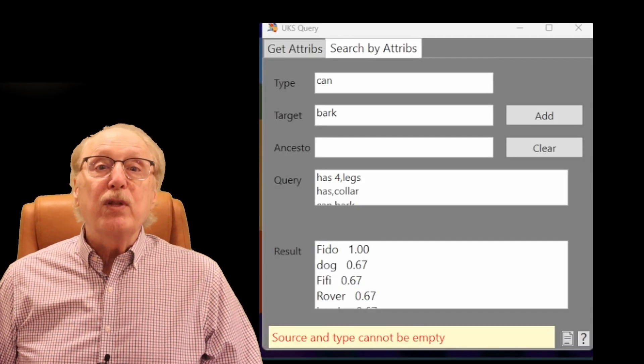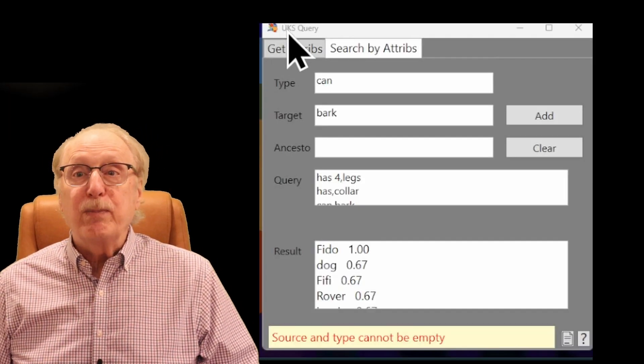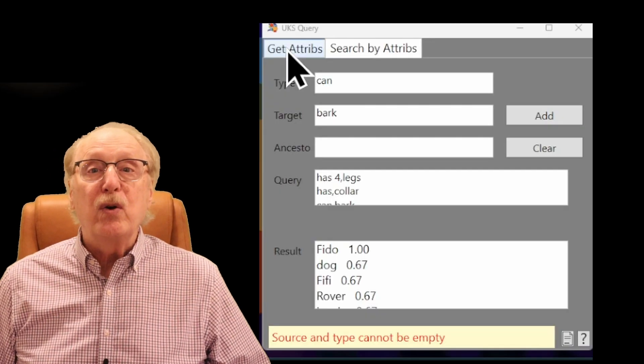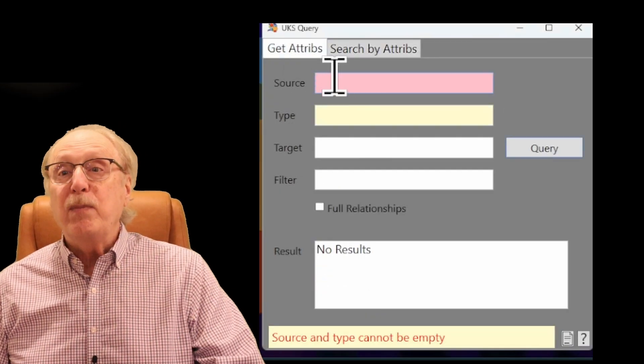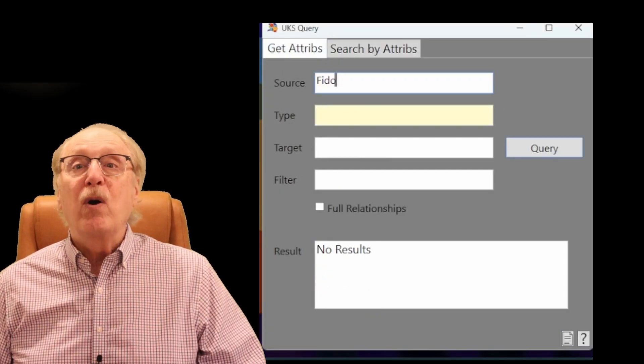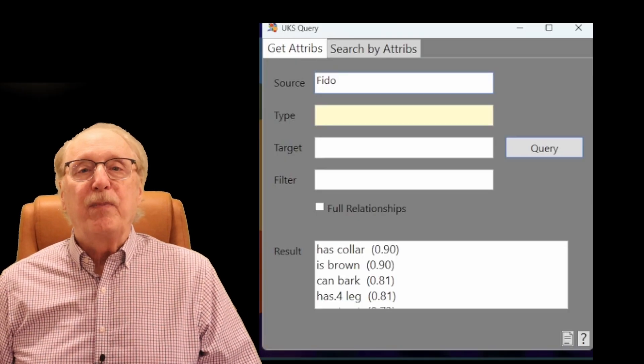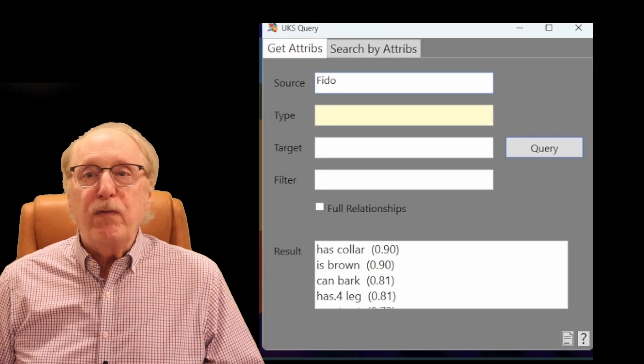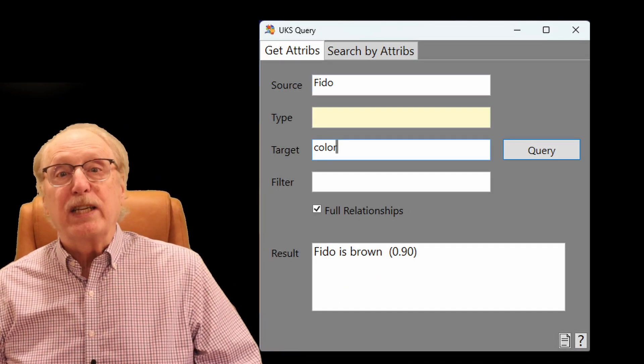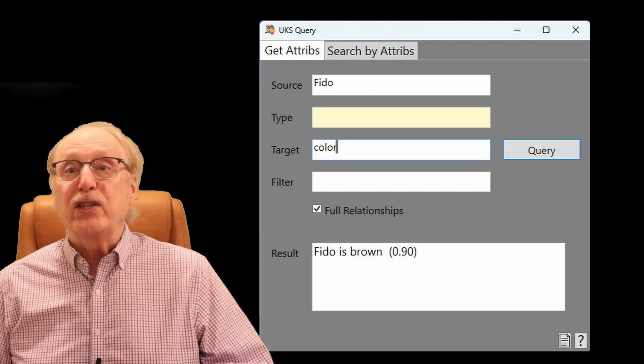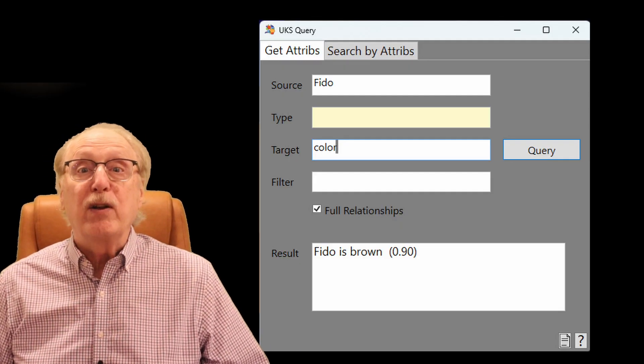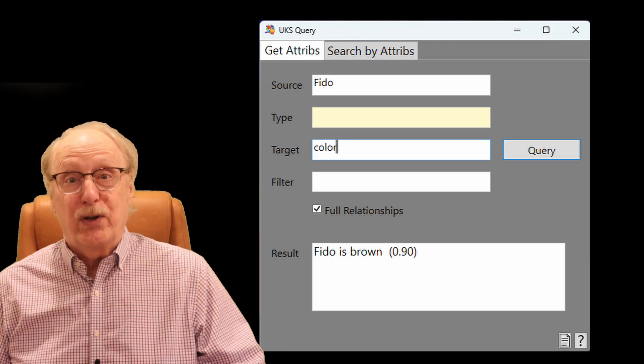In the brain simulator, this type of search is handled in a separate tab where you can put in a node such as Fido and immediately get all the attributes of Fido with confidence values. You can also filter these results so you could ask for the color of Fido by asking what are the attributes of Fido which are descendants of the color node.